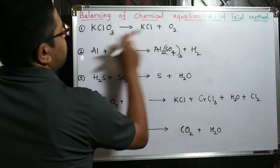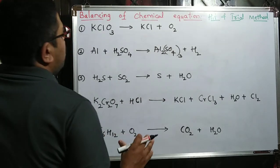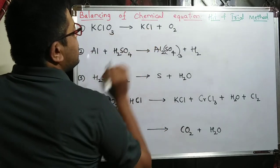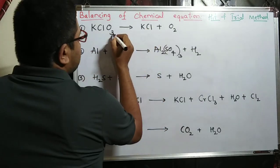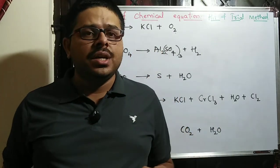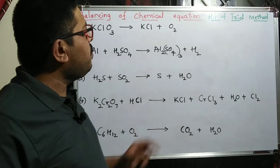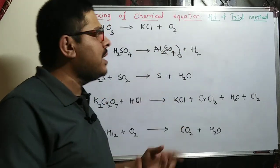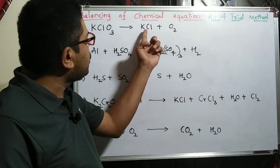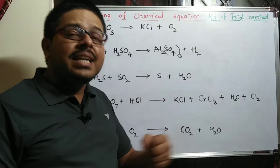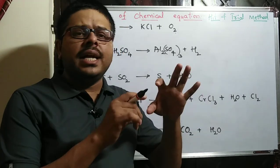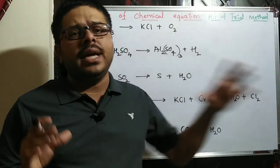Now we will take the first example. Here one potassium and one potassium — it is balanced. One Cl and one Cl — balanced. But there are three oxygens on the left and two on the right, so it is not balanced. You have to balance the oxygen, but when you go on balancing oxygen you have to change the coefficient, and when you change that number, other numbers also change. That is why it is called the hit and trial method. Finally, your balancing should match on both sides — we will cross-check at the end.